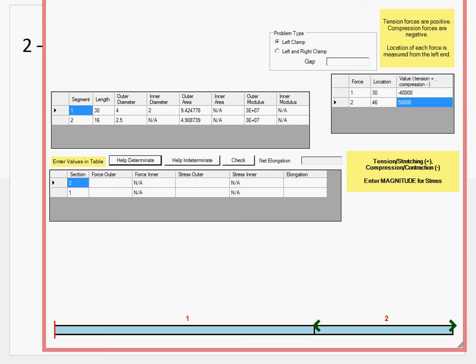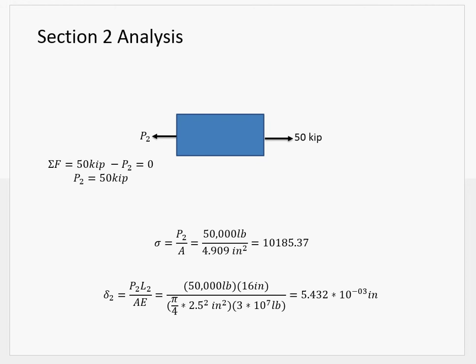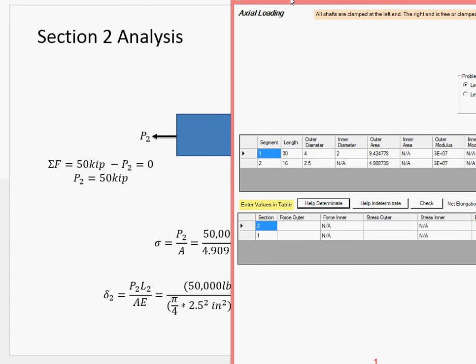Okay, so time to solve this. Starting from the right, we can look at section 2 first. So section 2 analysis, very simple. Summation of forces comes down to the reaction doing 50 kip. Then P over A, where A is that area for section 2, gives you your stress. And PL over AE using segment 2's reaction and its length and so on. So we can put in that information.